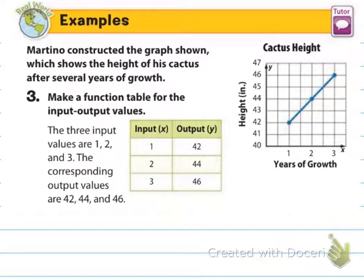Example number three. Martino constructed the graph shown, which shows the height of his cactus after several years of growth. Make a function table for the input-output values. The three input values are 1, 2, and 3. This is the years. That was our input. And the height that it grew, that's our output, our Y value. Because the independent variable is the years, and the height that it grows is dependent on how many years it's been. It tells us that after one year, it's 42 inches. After two years, it's 44 inches. And after three years, it's 46 inches.